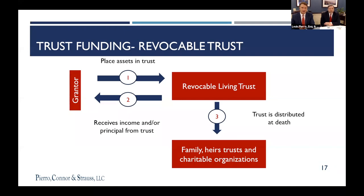There are specific cases where probate really must be avoided. We saw one recently where two beneficiaries are under a disability in the form of mental illness — that gums up the works because they can't sign a waiver. So a citation has to be issued, and a guardian ad litem is going to be appointed for those people, meaning it's going to be a much longer and drawn-out process. You want to avoid probate when there's any kind of what the law calls incompetence — an older person who's lost capacity, or a minor.